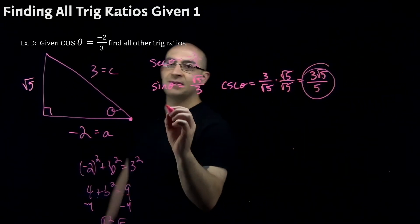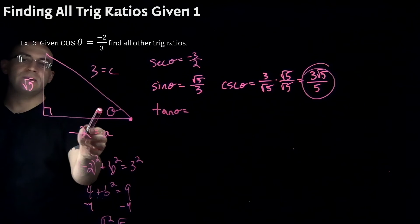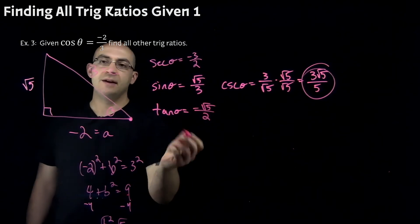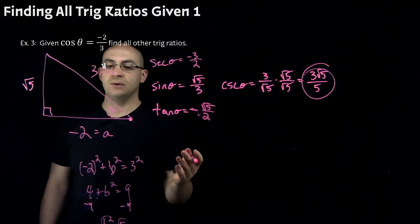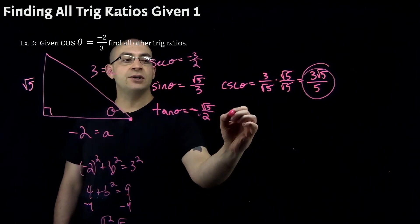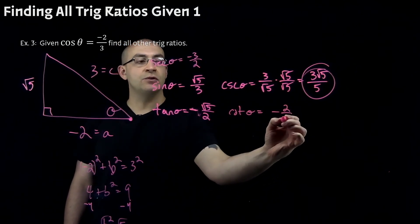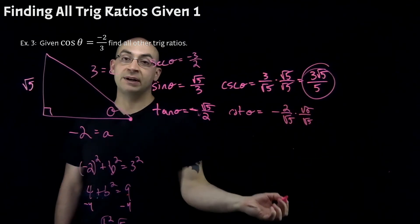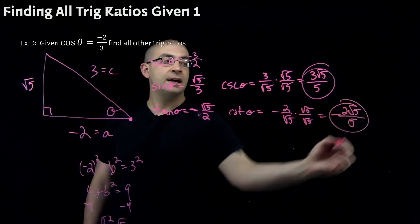Now for tangent — opposite over adjacent — we get negative root five over two. The negative sits there because our cosine value was negative and we're in quadrant two. Cotangent, the last of our six functions, is the inverse of tangent: negative two over root five. We rationalize by multiplying by root five over root five, giving negative two root five over five. And that completes all six trig ratios for example three.